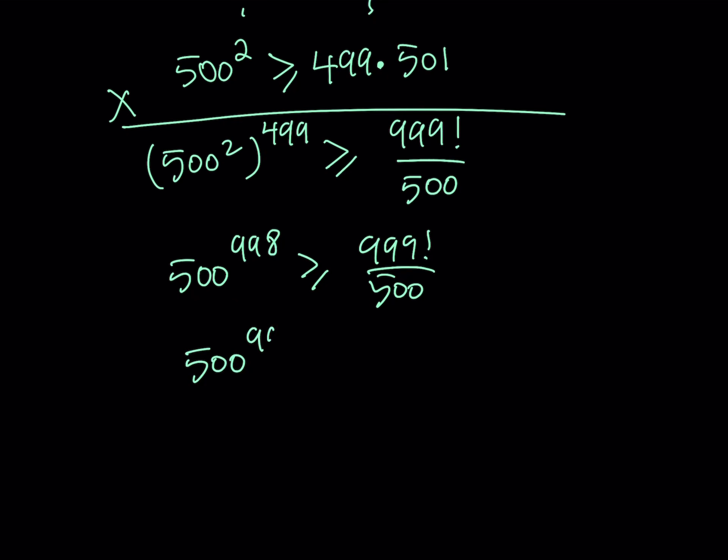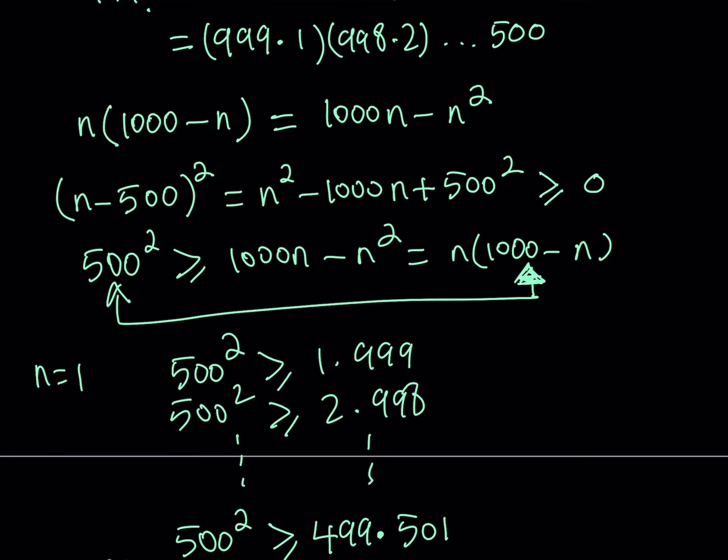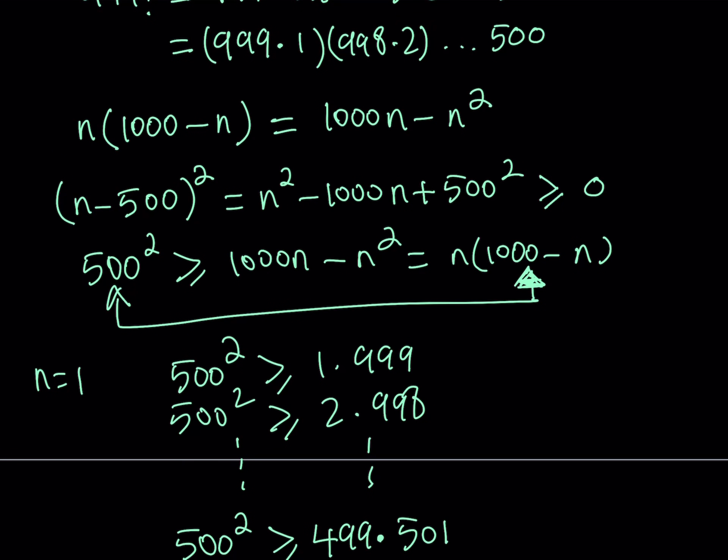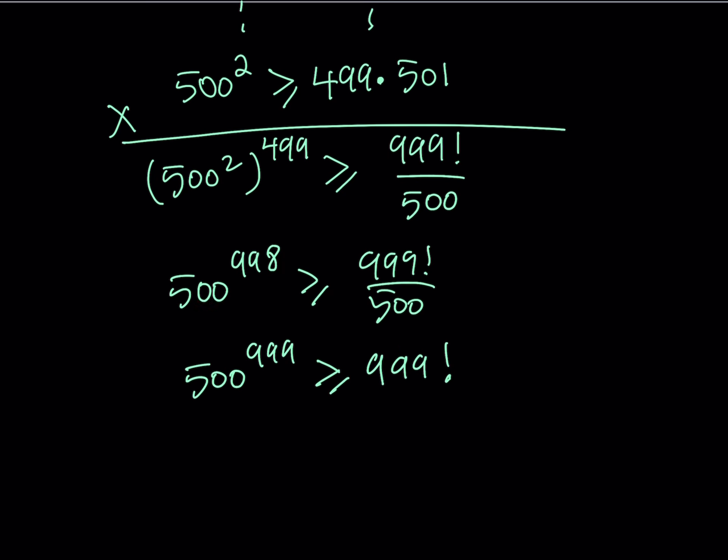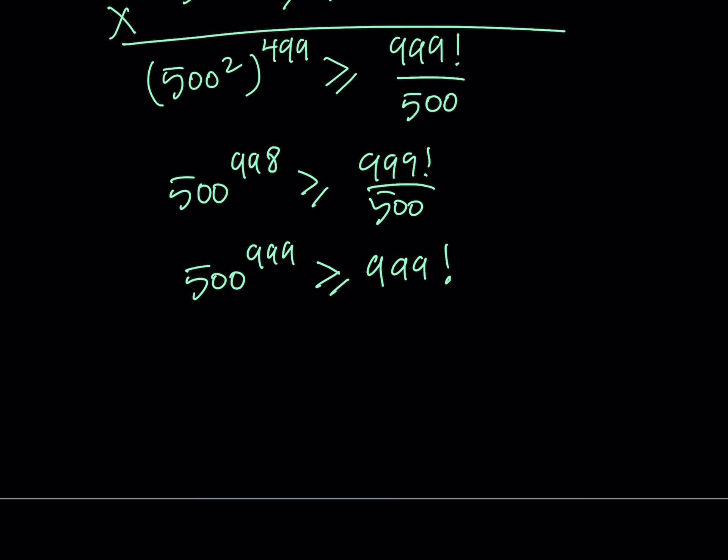If you multiply both sides by 500, which is a positive number, you get 500 to the power 999 is greater or equal to 999 factorial. Obviously, there is no way they can be equal, but the equality comes from the fact that these numbers are equal. So we can safely say that this implies that 500 to the power 999 is the greater number. That concludes our first method.